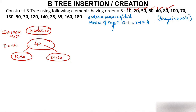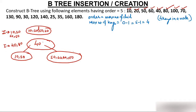Now insert 80 — it goes to the right child after 60. Insert 100 — goes after 80. Now try to insert 70 — it would go between 60 and 80, but that node is already full with 50, 60, 80, 100. So we cannot insert directly.